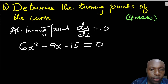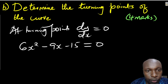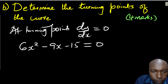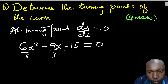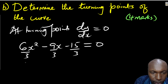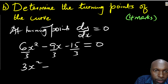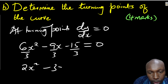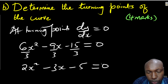We simplify the equation 6x squared minus 9x minus 15 equals 0 by dividing all through by 3, giving 2x squared minus 3x minus 5 equals 0. We can use any suitable method to solve this quadratic equation.